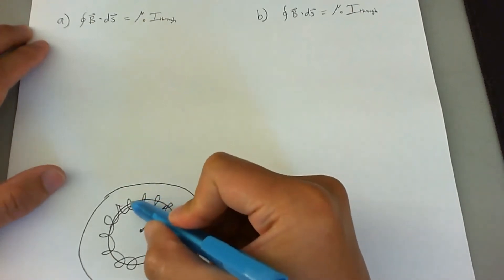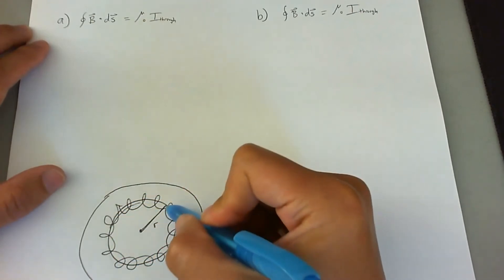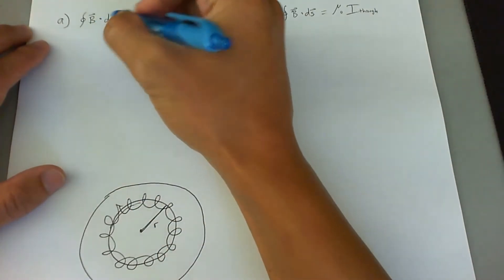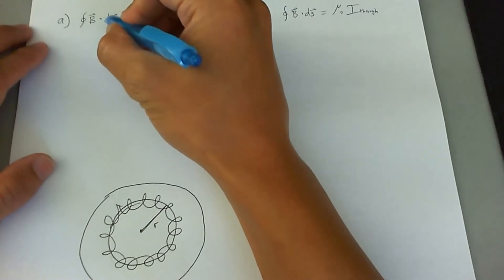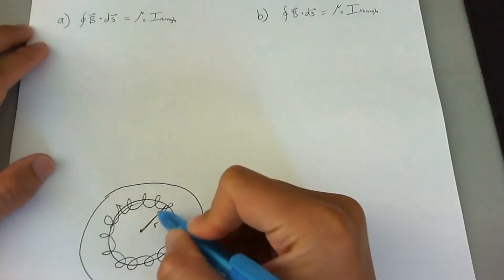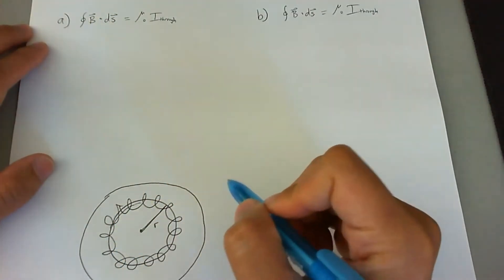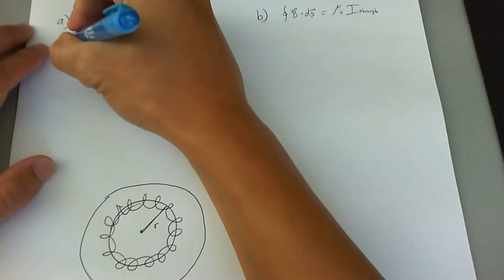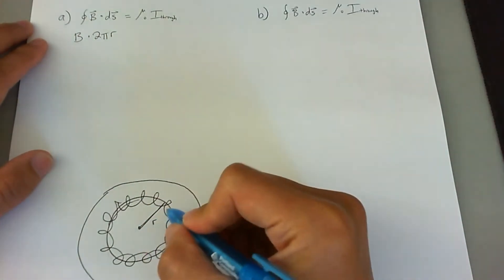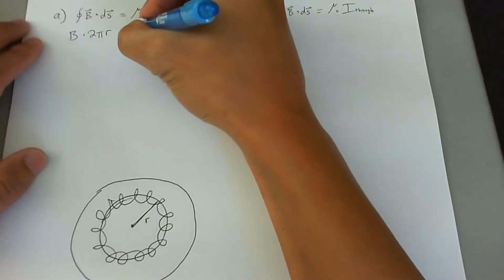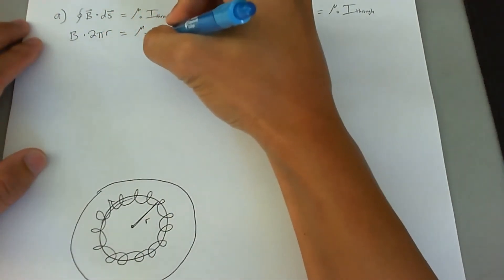So the B field is always going to be perpendicular to that. It's always going to be parallel to this path that goes straight through the solenoid. So this dot product is going to go away, since the B field is always going to go parallel to the circular path that we have here going through the solenoid. So we'll have B times 2π little r, and that's going to equal μ₀I going through.